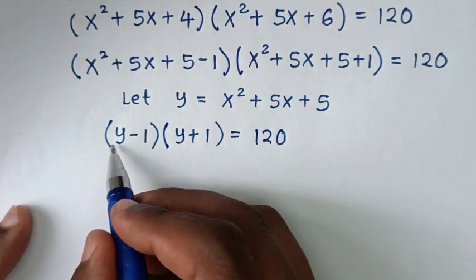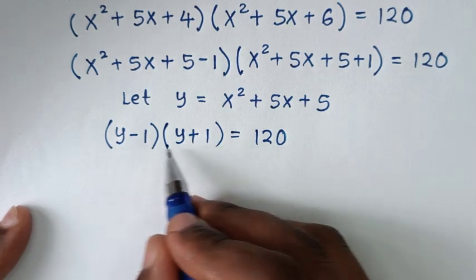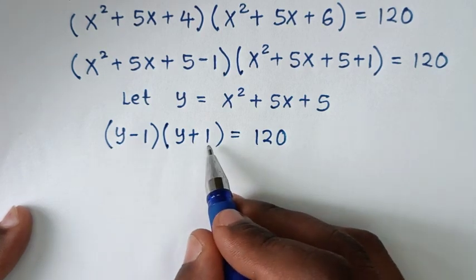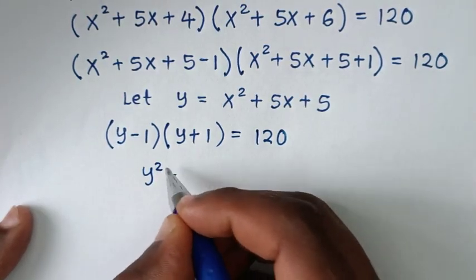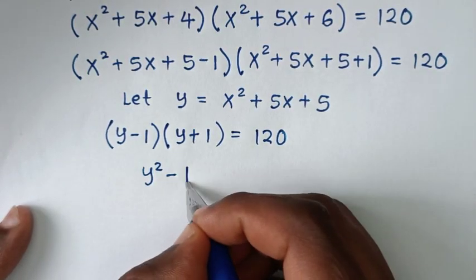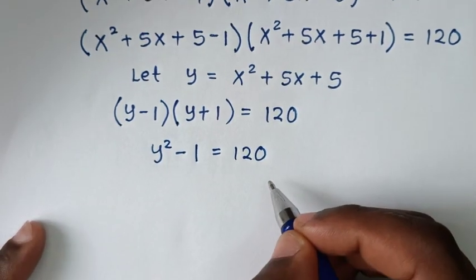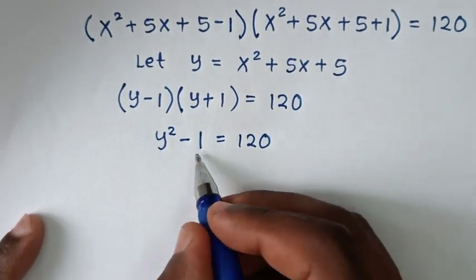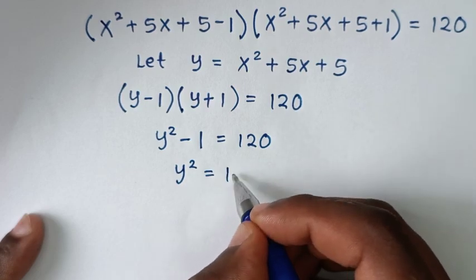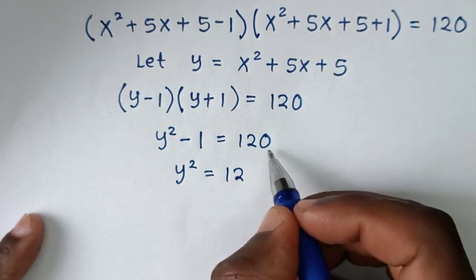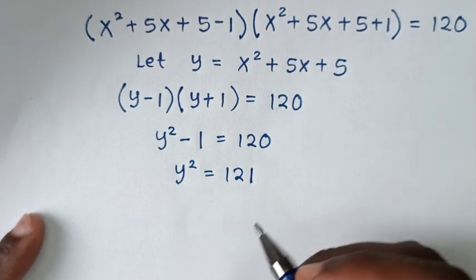Now, (y minus 1)(y plus 1) is in the form of a difference of squares, so it will be y squared minus 1 equals 120. Then we take negative 1 to this side, so y squared equals 120 plus 1, which is 121.